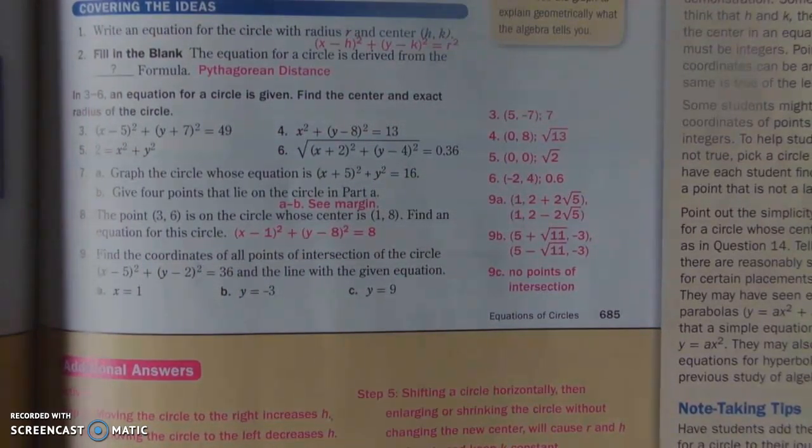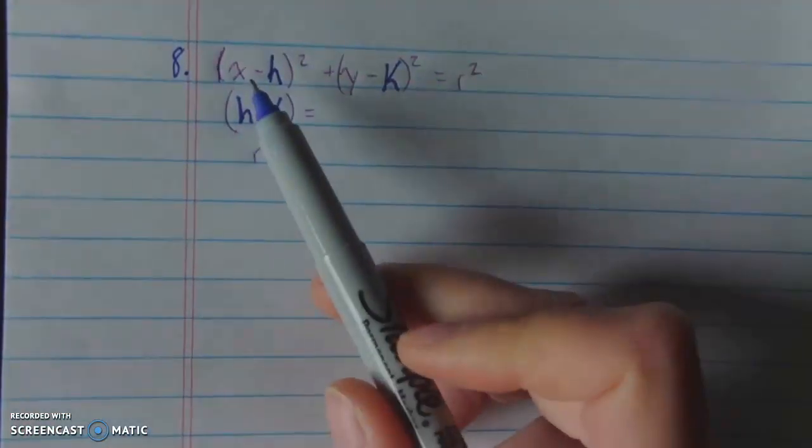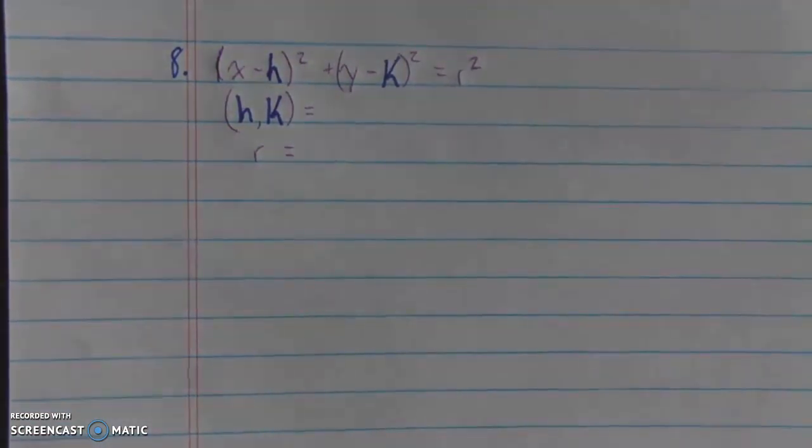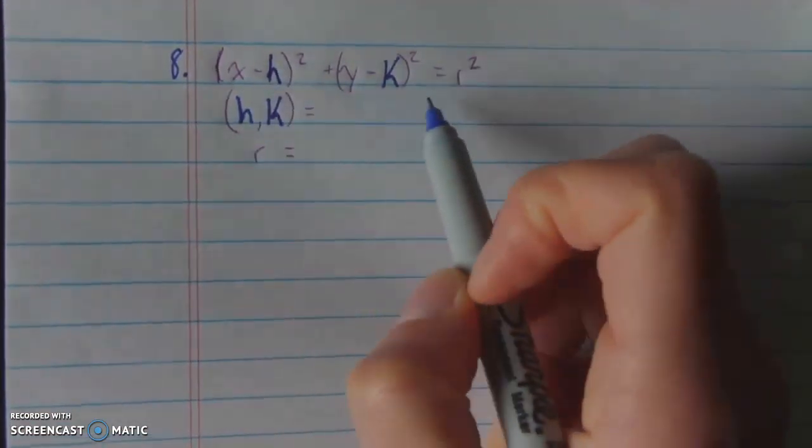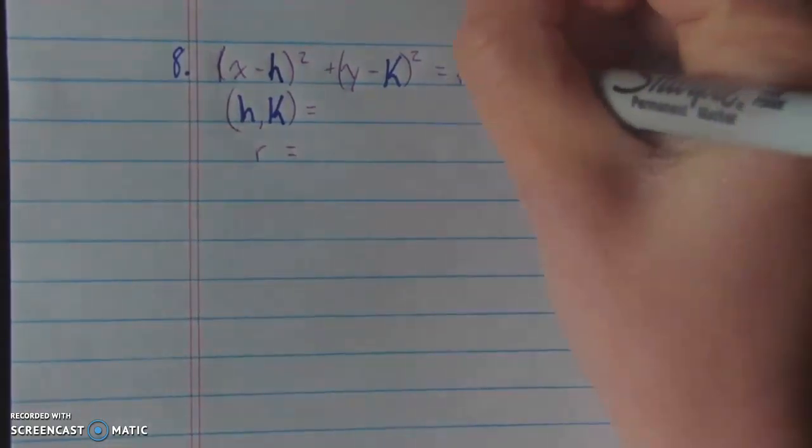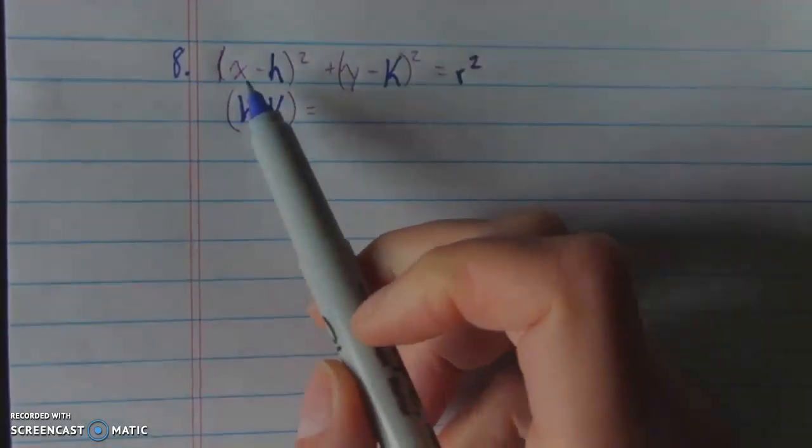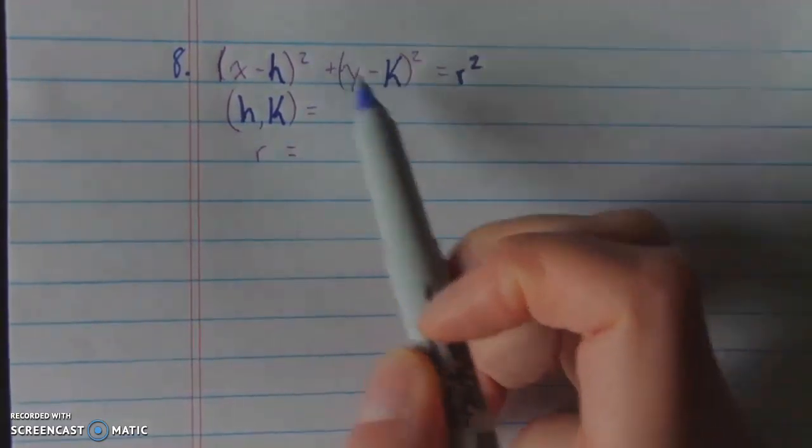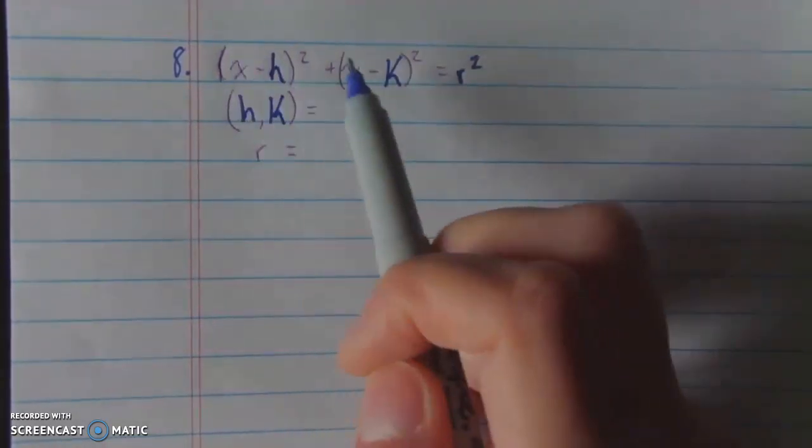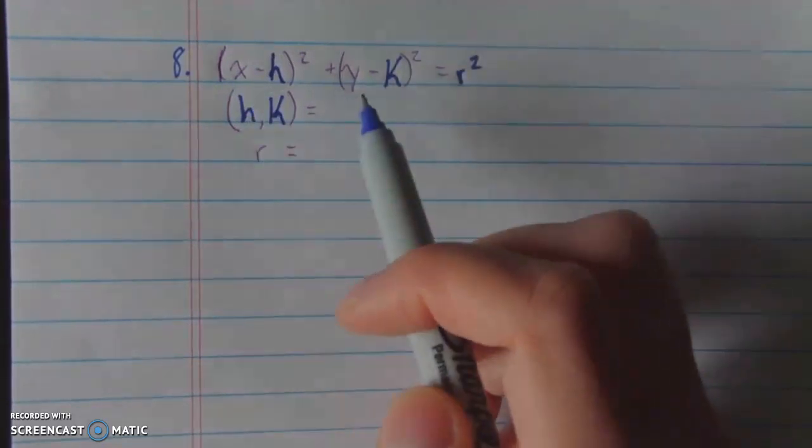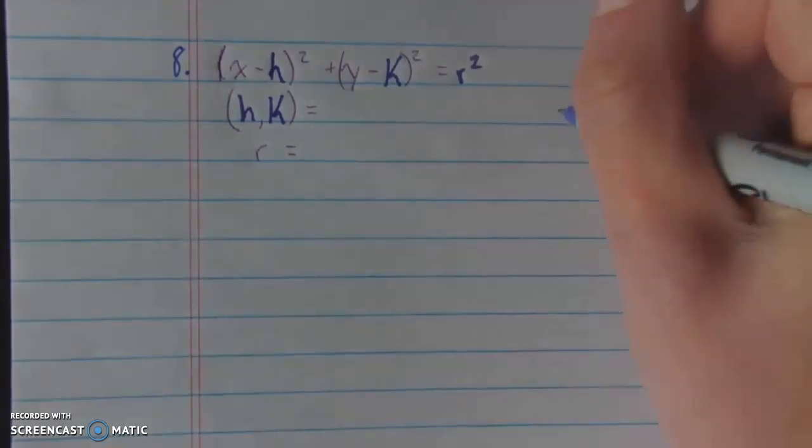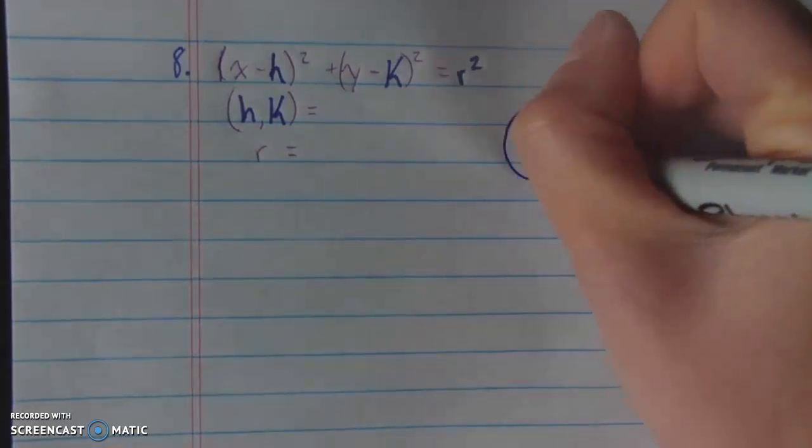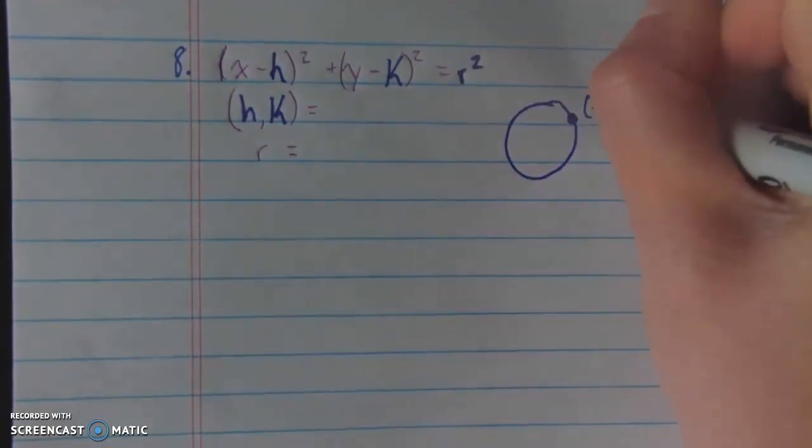But how on earth did they know that the radius squared is 8? Well, this is what they did. They said, okay, I want an equation of a circle. And as soon as I know I want an equation of a circle, I should write down what the equation of a circle is.